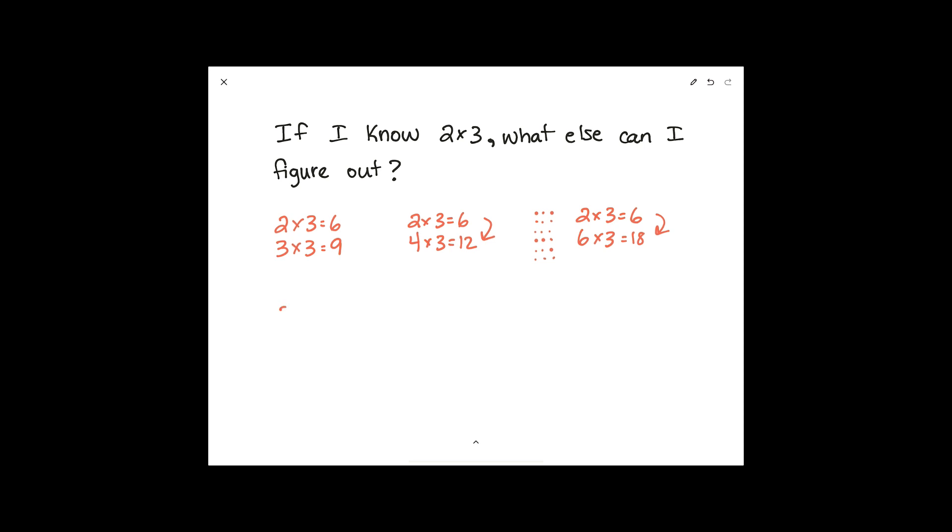What if I start with 2x3? I know that that's 6 and then I take away a group of three. Now I know that 1x3 is going to be three less than this product. So I'll have 3.